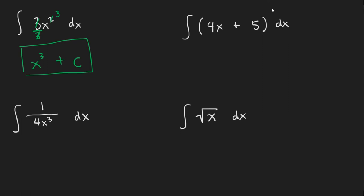For our next problem we're given two terms. So just like when we find the derivative, what we can actually do is just split these apart. So the anti-derivative of 4x dx plus the anti-derivative of 5 dx. So we can work out these one at a time.